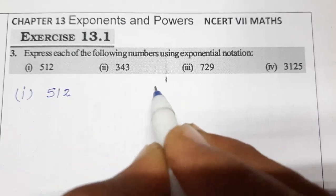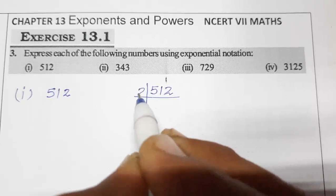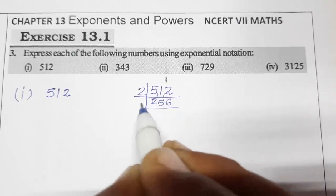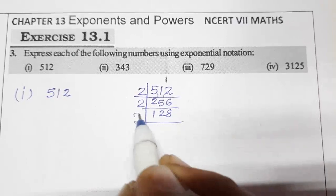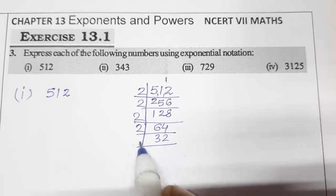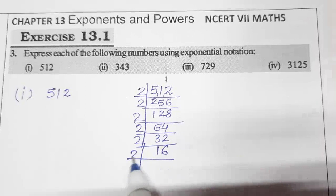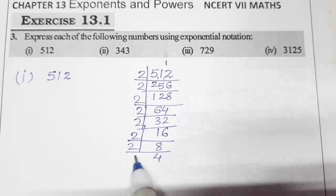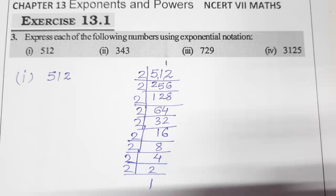So let's take the factors of 512 first. We will take all prime factors. 2 goes into 512 to give 256, then 128, then 64, 32, 16, 8, 4, 2, and finally 1. So we have taken the factors of 512.